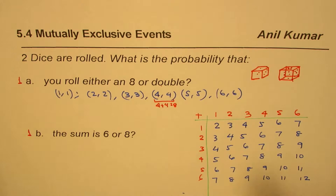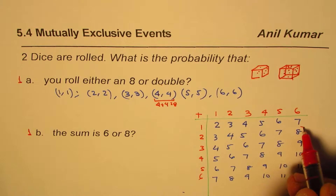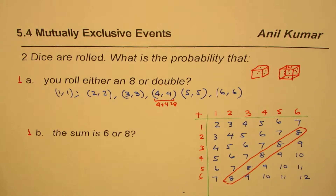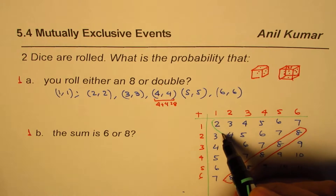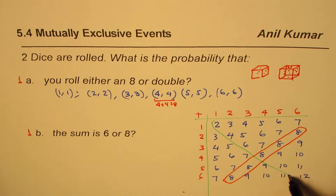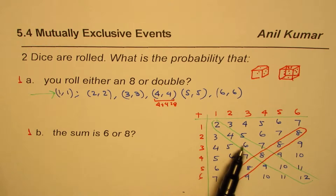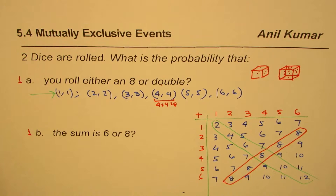Let's count how many outcomes add up to eight. Looking at the table, the outcomes that sum to eight are identifiable. The doubles lie along the diagonal: 1+1=2, 2+2=4, 3+3=6, 4+4=8, 5+5=10, 6+6=12. Since 4+4 appears in both sets, this confirms the events are not mutually exclusive, and we'll apply the principle of inclusion and exclusion.